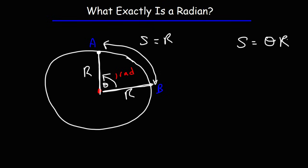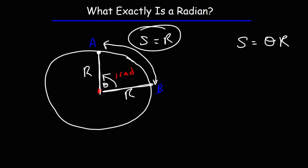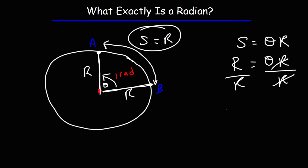Here's how you can use this formula to get that answer. We're going to make S equal to R, so I'm going to replace S with R. If you divide both sides by R, R divided by R is 1. And so when S is equal to R, theta is equal to 1, or more specifically, 1 radian.